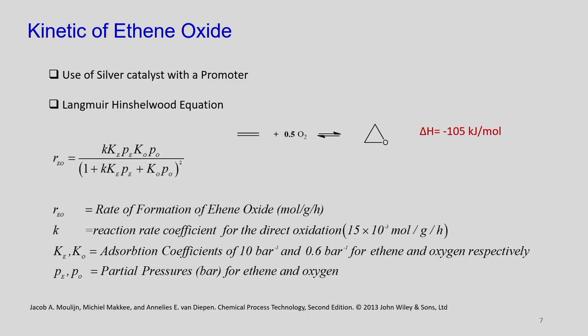A rate equation for ethylene oxide production has been correlated with the Langmuir–Hinshelwood equation. In this expression, the rate of formation of ethylene oxide (mol/g/hr) depends on the reaction rate coefficient, adsorption coefficients Ke and Ko for ethylene and oxygen respectively, and partial pressures Pe and Po in the reactor. This kinetics expression, reported in the textbook, gives engineers a tool to design the reactor.